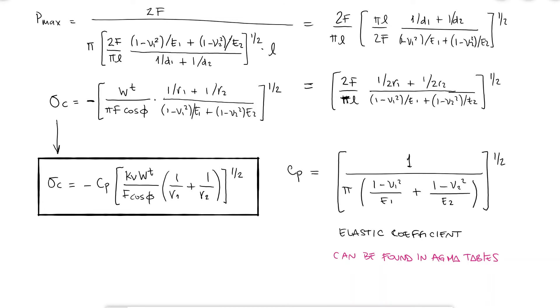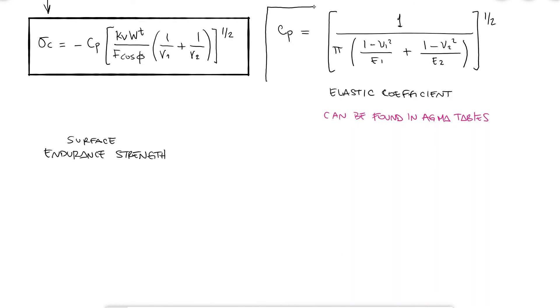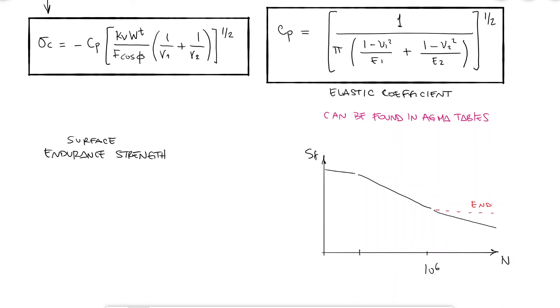For surface fatigue, we don't use endurance limits. Endurance strengths will always depend on the number of cycles. There is a change in slope in the Sn curve near 10 to the 6 cycles, but all experiments indicate that the endurance limit does not exist.